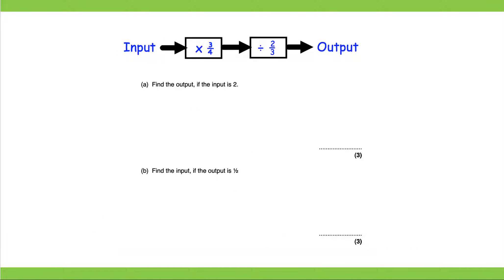Next question. Find the output if the input is 2. So if the input is 2 over here, 2 multiplied by three quarters, that would give you 6 over 4.